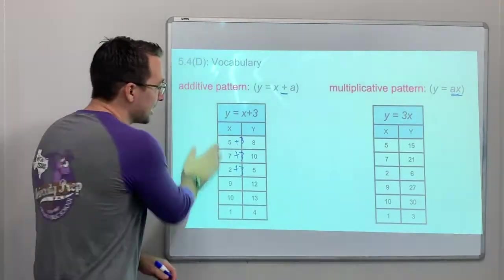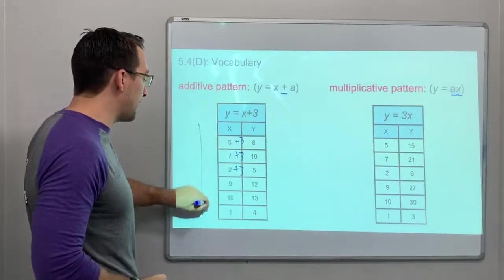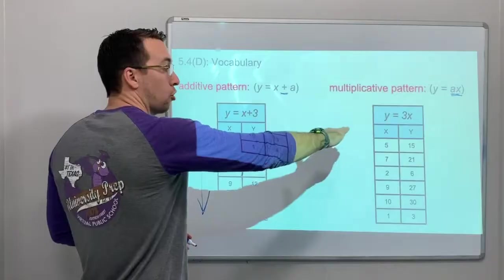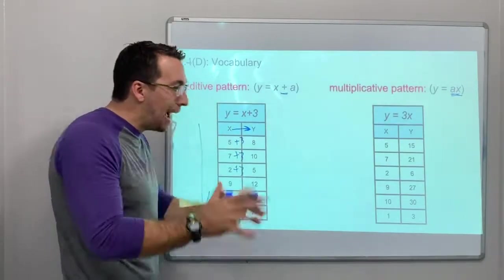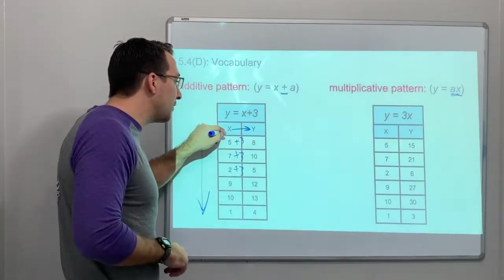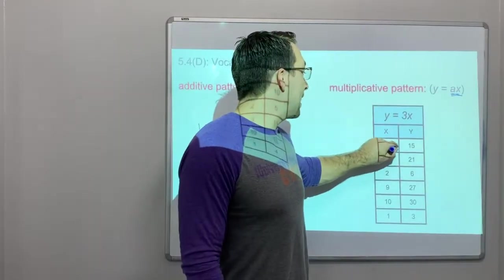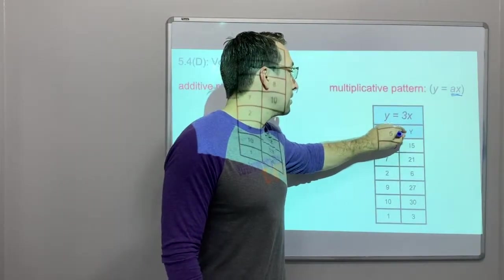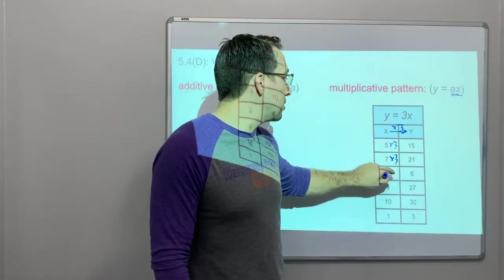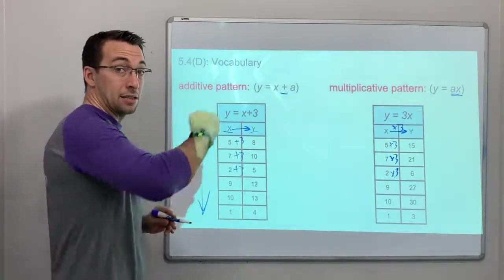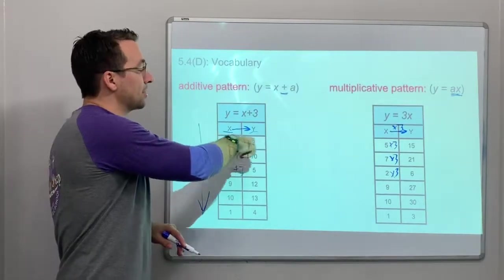Now, notice, this isn't a pattern: 5, 7, 2, 9, 10, 1. The pattern isn't up and down. The pattern is across from x to y. Okay? The pattern is from your x value to your y value. That's the pattern. 5 times 3 is 15. x to y, so it's times 3. 7 times 3 is 21. 2 times 3 is 6. x to y. x times 3 is y. x plus 3 is y.